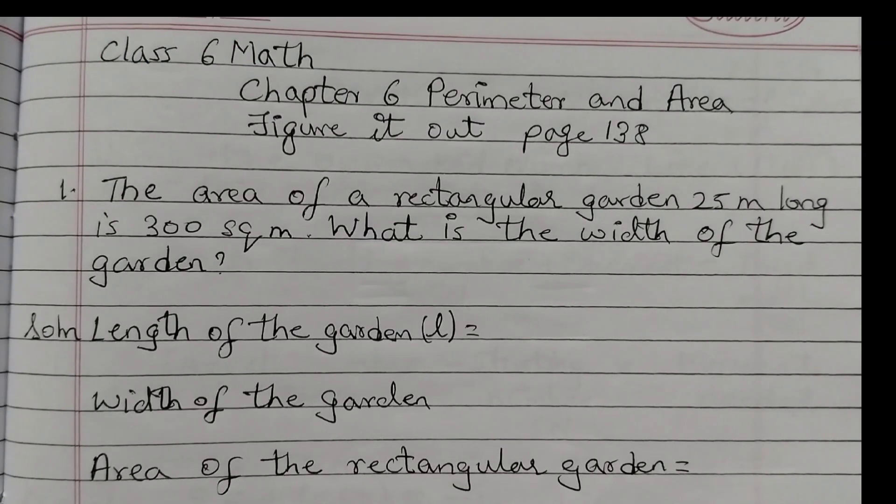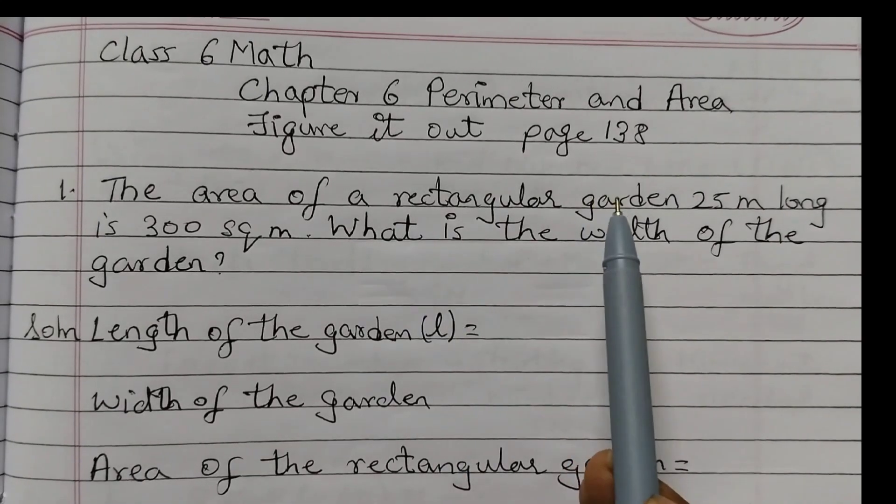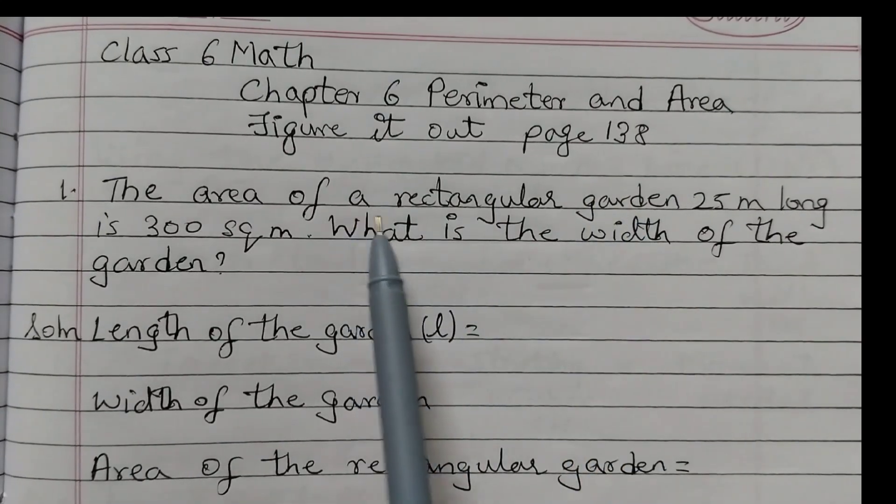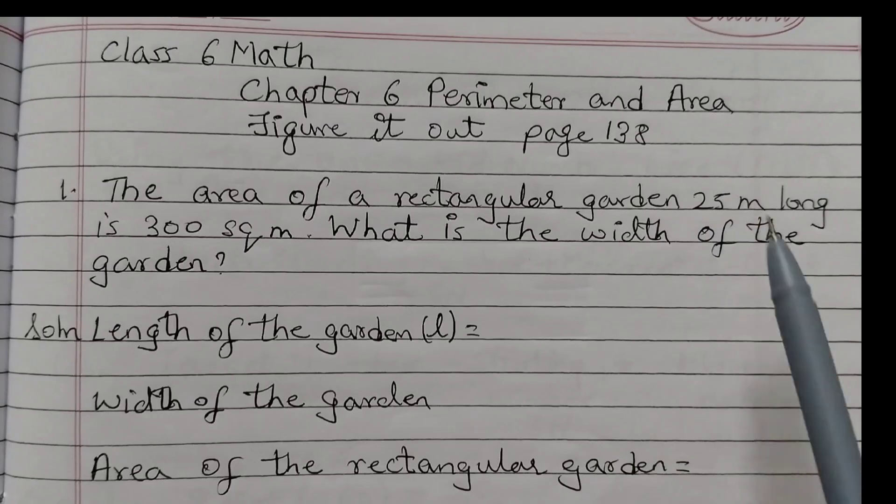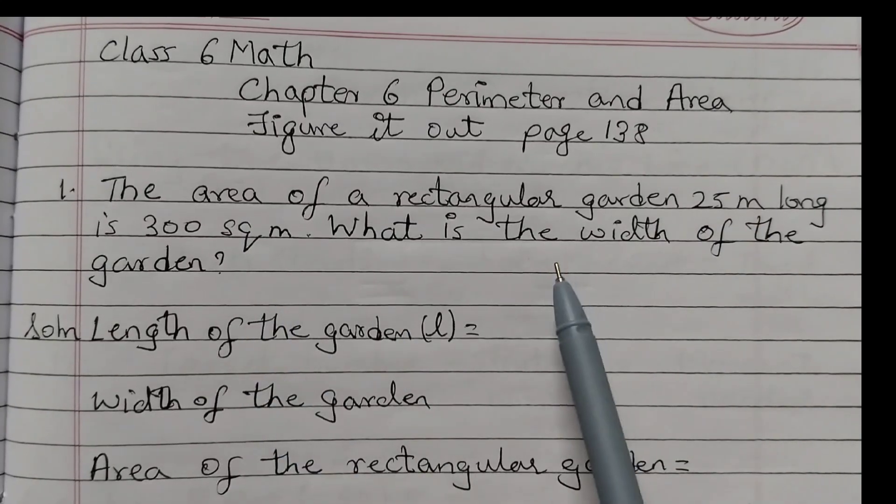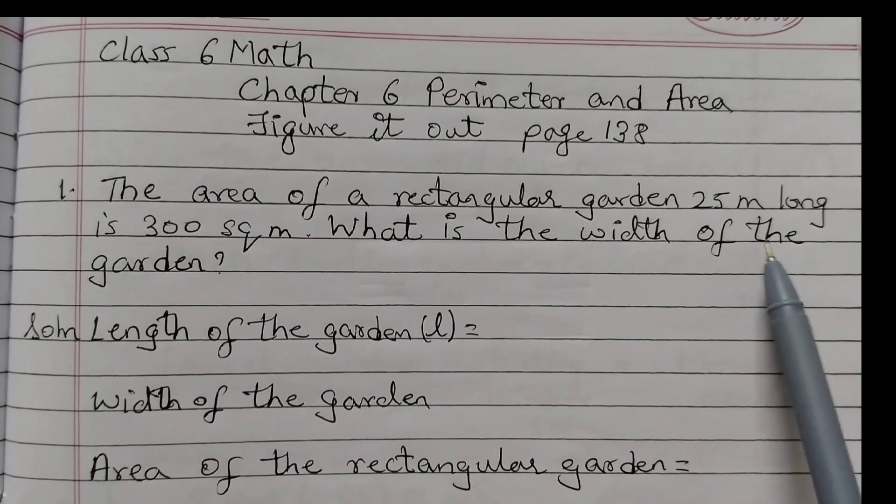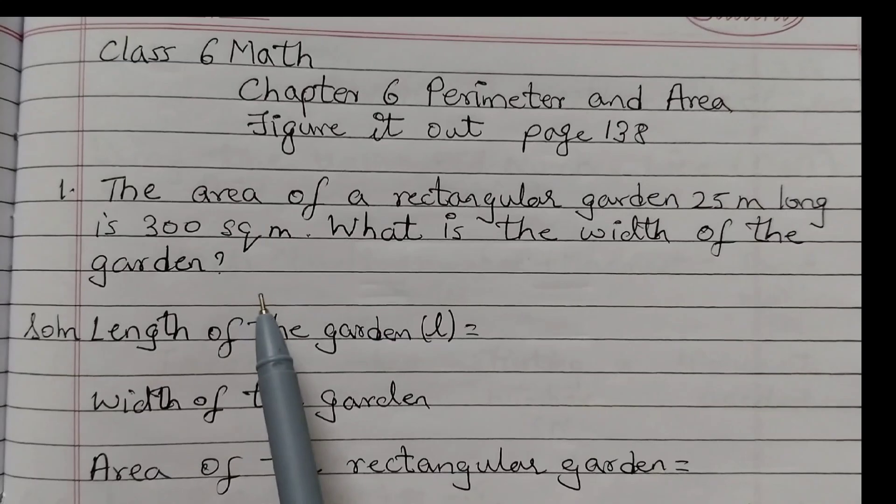Hello students, welcome back to Rosymats class. Today we shall solve question number 1 from Figure It Out, page number 138, that's from Chapter 6: Perimeter and Area. The area of a rectangular garden 25 meters long is 300 square meters.